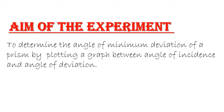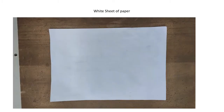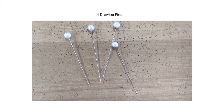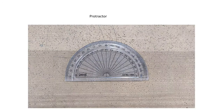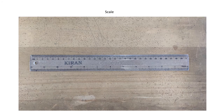Welcome students to the new experiment. The aim of the experiment is to determine the angle of minimum deviation of a prism by plotting a graph between angle of incidence and angle of deviation. Apparatus required: a drawing board, white sheet of paper, drawing pen, prism, protractor, scale, and graph paper.